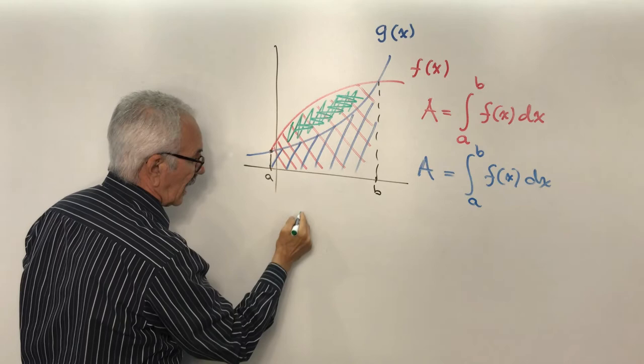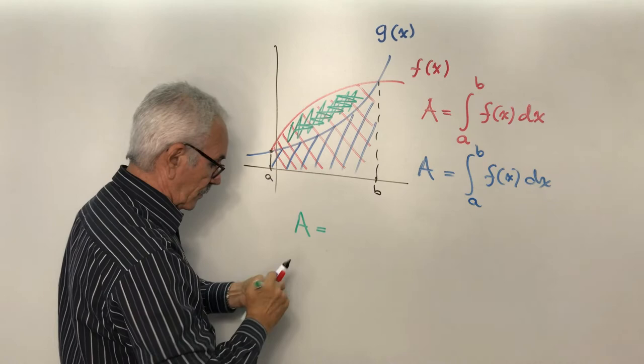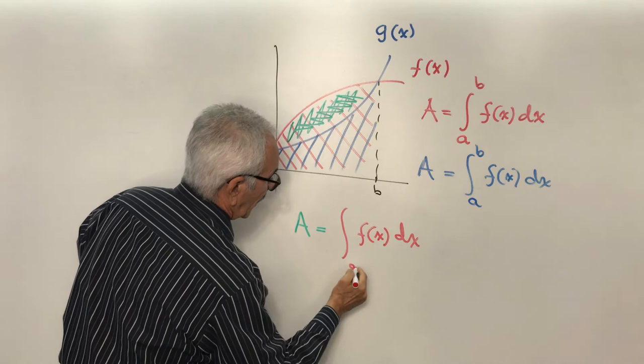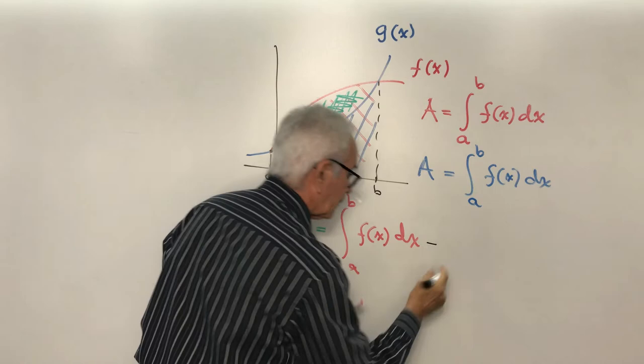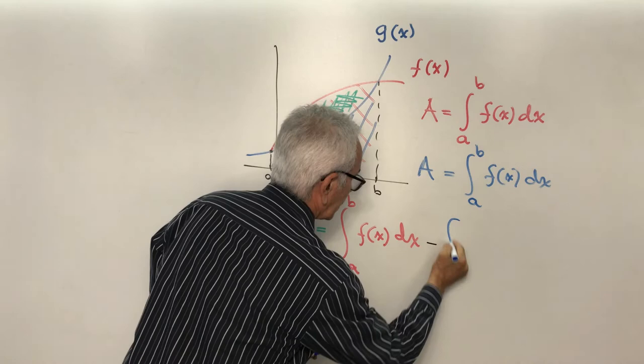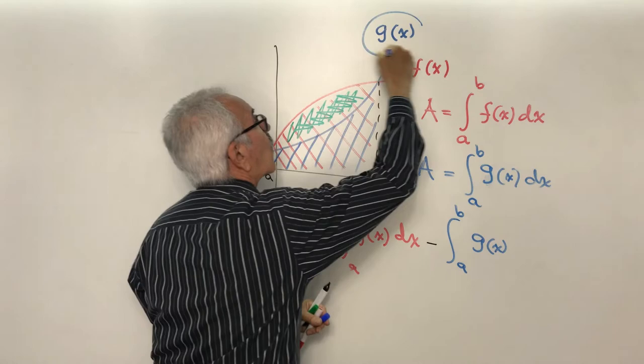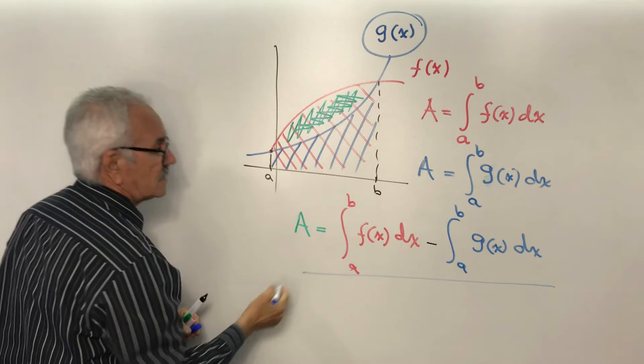So this area between two curves can be written as the integral from A to B of f(x) dx minus the integral from A to B of g(x) dx. Note: I previously wrote f here — that should be g(x), because the blue color represents g(x). This is our final equation to evaluate the area between two curves.